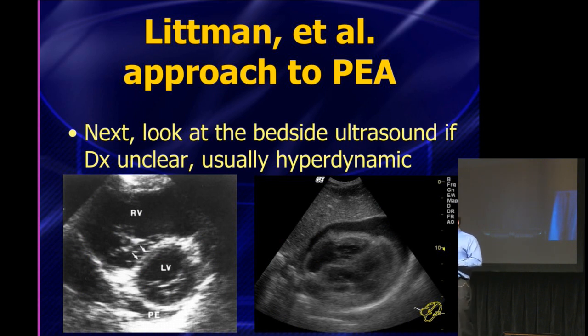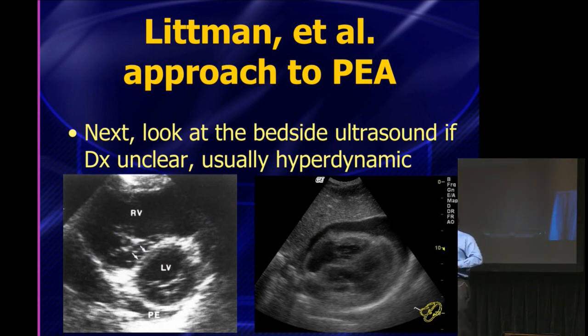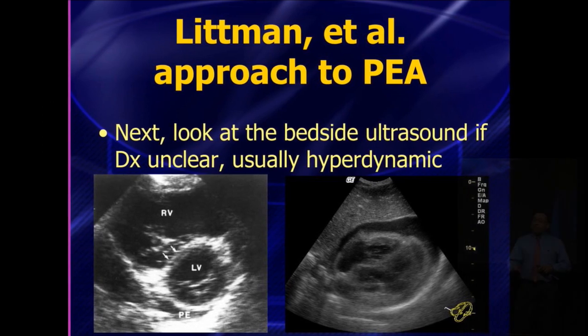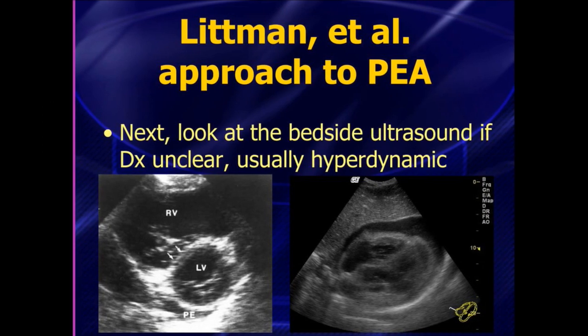You've got your differential, already narrowed because you simply looked at the QRS. How do you tell the difference between these causes? Next step: take a look at the ultrasound. Large pericardial effusions causing tamponade are easy to see even with basic skills. For massive PE causing cardiac arrest, you'll see a massively distended right ventricle and a relatively small left ventricle. Once you look at a handful of hearts, this size disparity will jump out at you, because it should be the other way around.